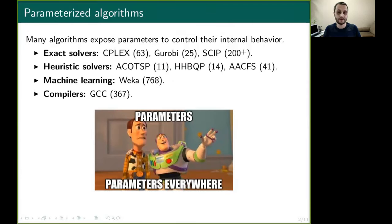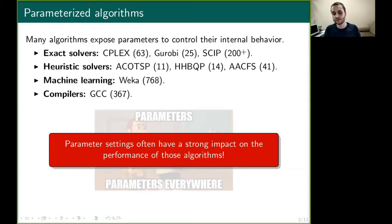First, because a lot of algorithms expose input parameters, and here we have some examples. But more important, the performance of such algorithms depends directly on choosing appropriate values for these parameters.